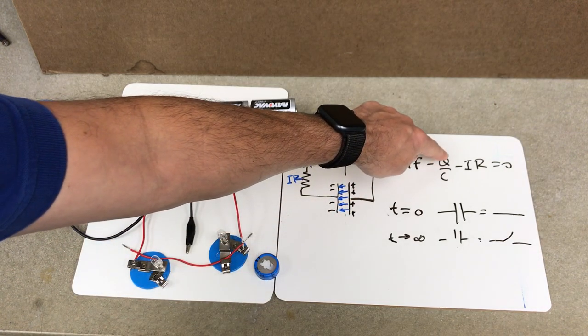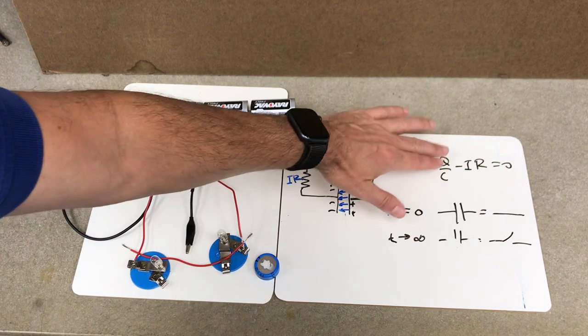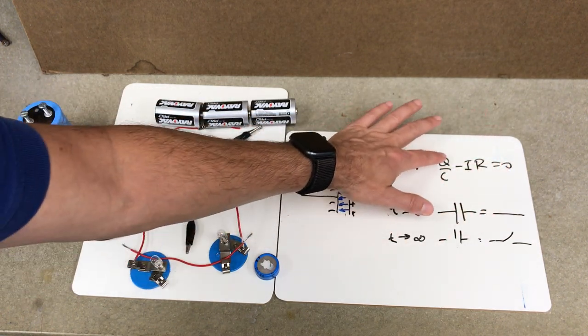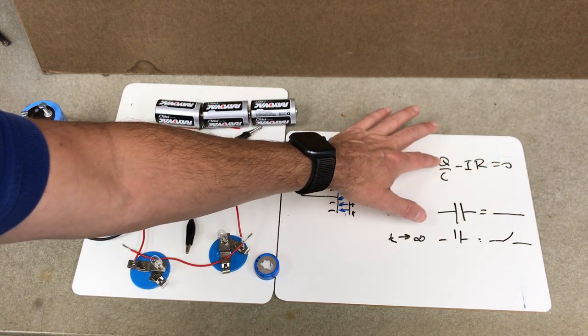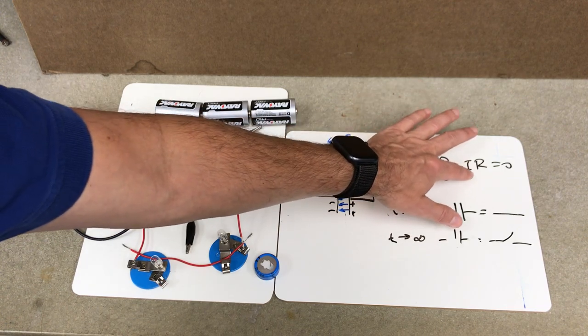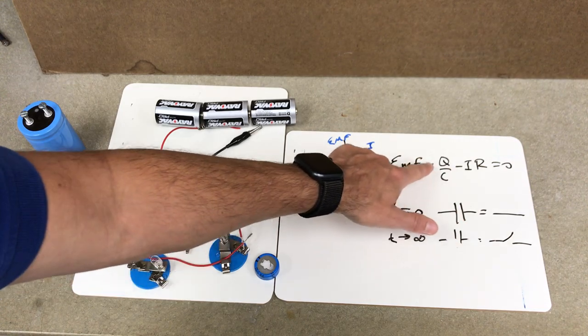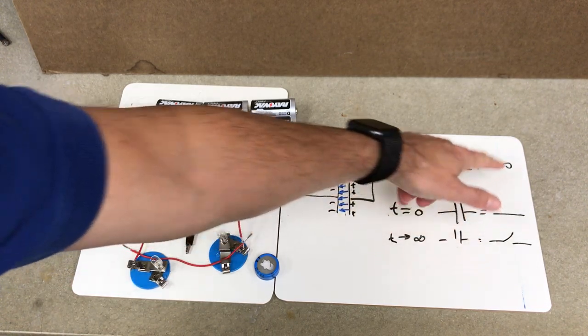So the battery minus Q over C, that's the voltage on the capacitor, minus IR, that's the voltage across the resistor, equals zero. So as Q builds up, at first Q is zero, so this term is zero. So we have a high current in order for this to be zero. As charge builds up, then this term gets bigger, so the I gets smaller, so the current decreases. Eventually, this term will be equal to EMF, and there'll be no current.